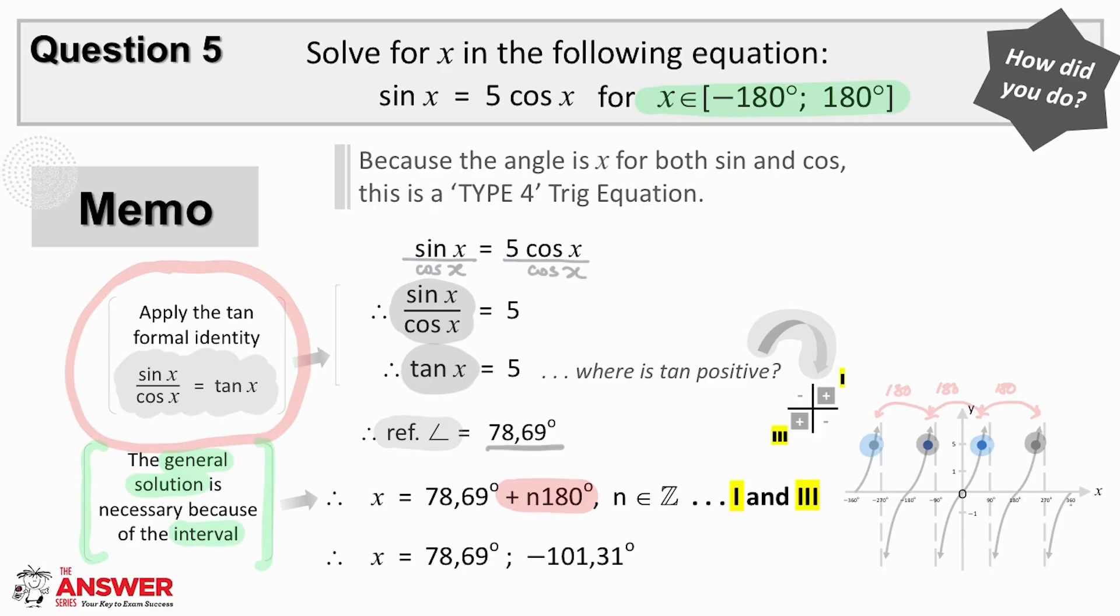Once we have this equation, then we can find the solutions for x that fit the interval required. The required interval for solutions for x in this question is between minus 180 and 180, and so 78.69 is a valid solution. Then if we make n1 and therefore add 180, we get 258.69 degrees, which lies outside the required interval, and so is not a valid solution.